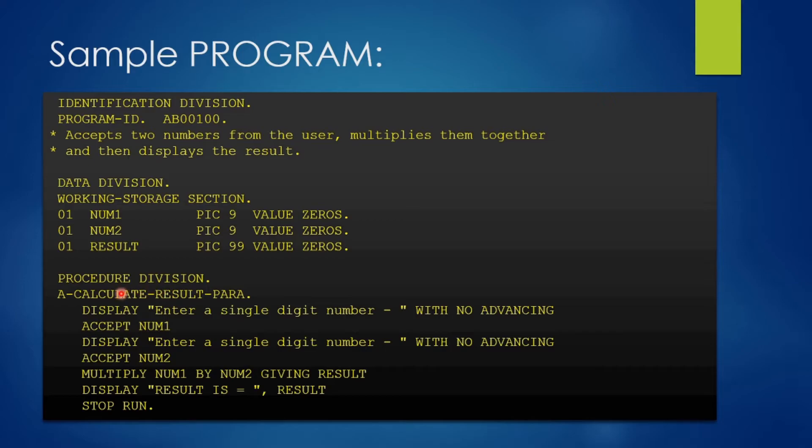Here we have coded paragraph name as calculateResultPara, since this para is going to do a calculation and provide you a result.